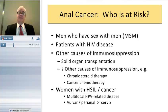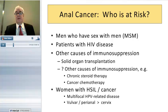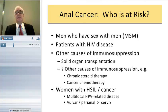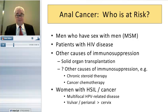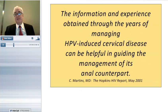We can compile a list of who is at highest risk for anal cancer and should be the highest priority for screening. This includes MSM; patients — men or women — with HIV; people who are immunosuppressed for reasons other than HIV, mostly solid organ transplant recipients but also those on steroids or undergoing chemotherapy; and women who have HPV-related disease at other sites, particularly the vulva, and probably cervical cancer and high-grade CIN as well.